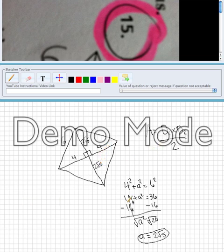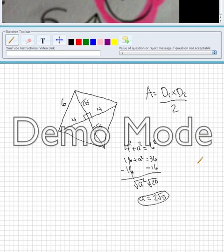So let's plug into the equation. So we have area equals diagonal 1. So we'll just call this one diagonal 1. That was 8.